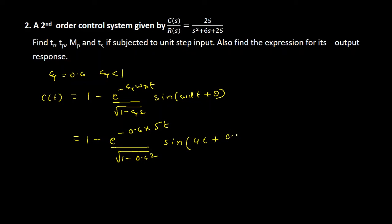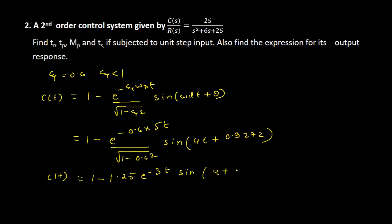Solving the expression, we get c(t) equals 1 minus 1.25 times e to the power of minus 3t, multiplied by sin(4t plus 0.9272). So this is the expression for the output response.